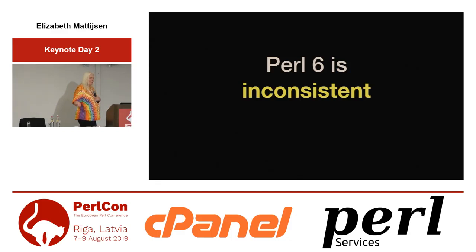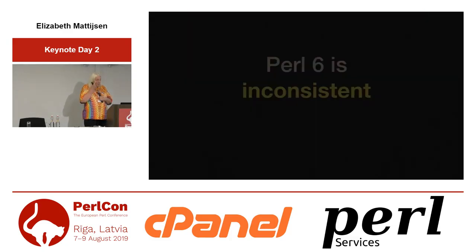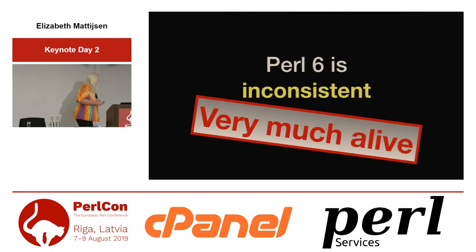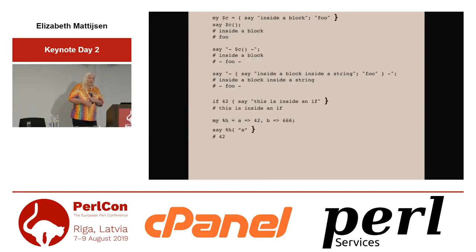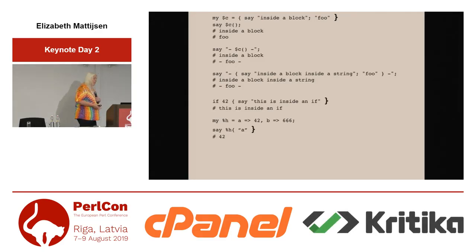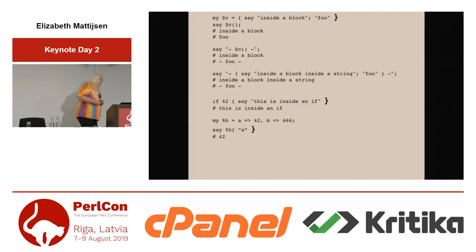Perl 6 is inconsistent — that pretty much seems to be alive as well. However, I would say I don't think that's true. Look at this piece of Perl 6 code: look at the curlies at the end of the line. A curly at the end of a line means end of statement — period. That's it. Consistent. Whether that's part of an if, or part of a block, or part of a hash access — a curly brace at the end of the line means end of statement.